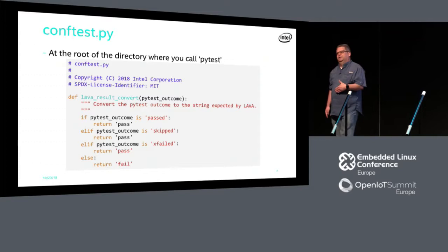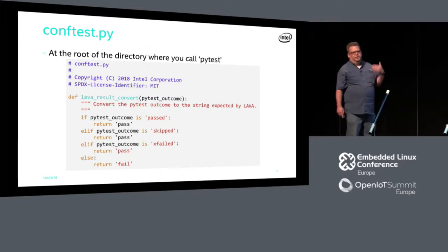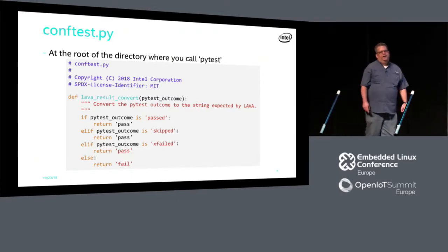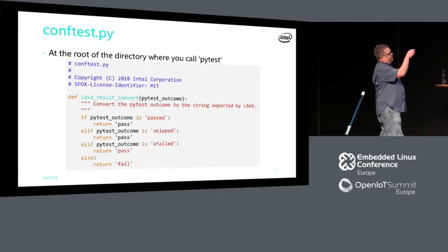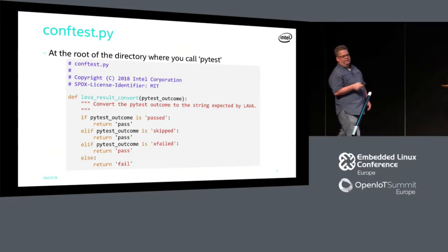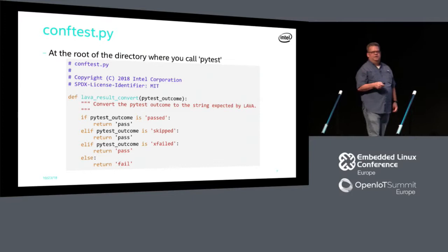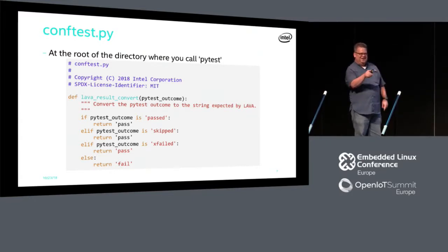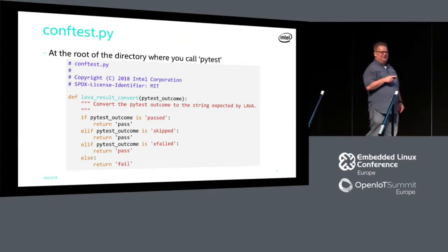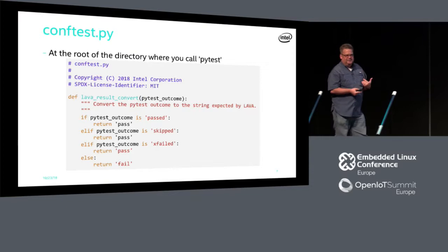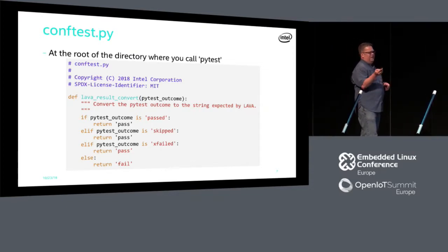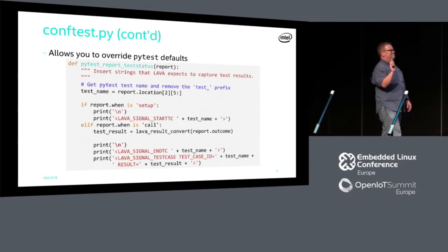What we literally did is: in the same folder where your tests exist, where you're going to call PyTest, you put this special file called conftest.py. PyTest is looking for this specific file name. In this case I need to convert the results from PyTest — this PyTest outcome of passed, skipped, or xfailed — right, so in Lava there is no such thing as an xfail condition. That one line you should change to skip. There's no xfailed — xfailed should just be a pass.